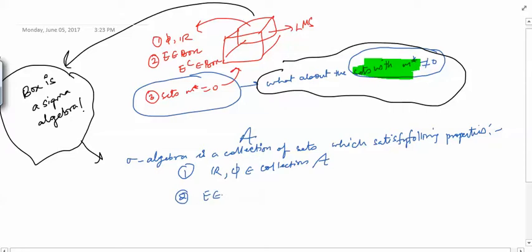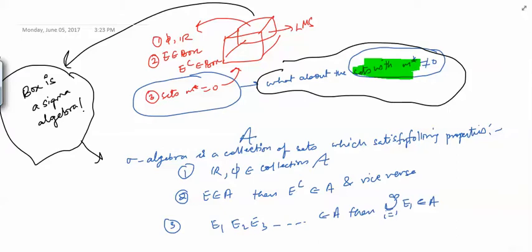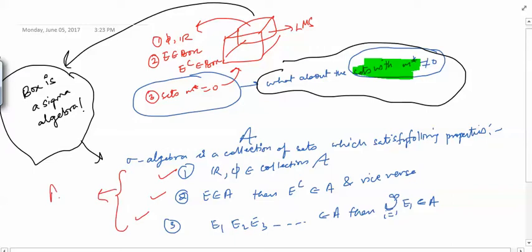The second property is that if a set E belongs to A, then E complement also belongs to A and vice versa. The third property is that if a countable collection E1, E2, E3, and so on are in A, then the union of Ei from 1 to infinity should also be in A. If these three properties are satisfied, then we say that the collection A is a sigma algebra.